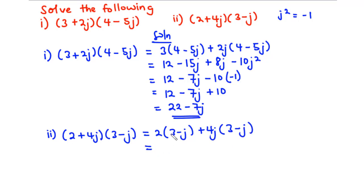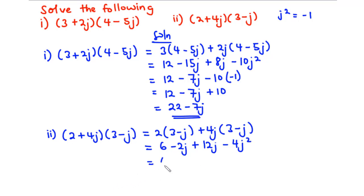So we have 2 times 3, which is 6, and 2 times -j is -2j. Then 4j times 3 is 12j, and 4j times -j becomes -4j². Simplifying: 6, then -2j plus 12j becomes +10j, and -4j² becomes -4 times -1.